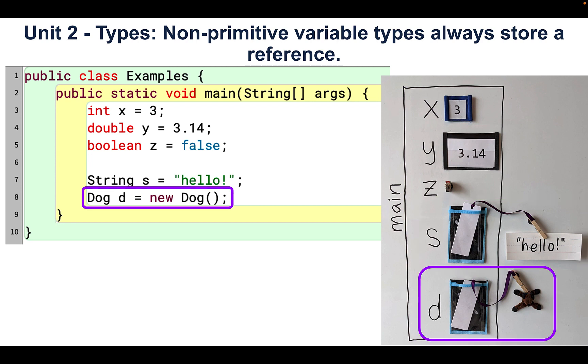d is a variable of type dog, which means it can store a reference to a dog object. d stores a reference to a dog object. That is, d keeps track of our newly created dog object.